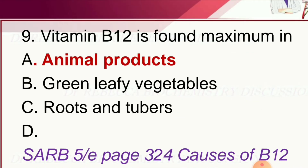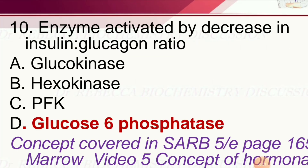Question 9: Vitamin B12 is found maximum in — options are roots and tubers, green leafy vegetables, and animal products. The correct answer is animal products.